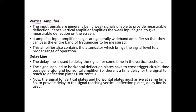Next is the delay line. The output of the vertical amplifier is given to the delay line. The delay line is used to delay the signal for some time in the vertical section — it provides some delay, and after that, the signal will be shown. The signal is then applied to the horizontal deflection plate.